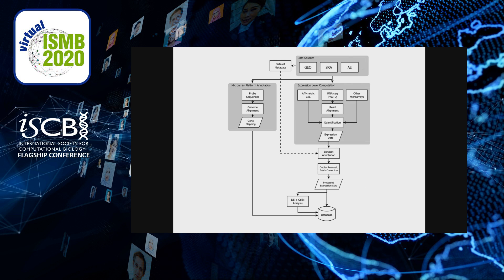Here, I show a flowchart depicting the flow of information from GEO into Gemma. The left branch shows the processing of microarray probe annotations, while the right shows the processing of expression data and metadata.